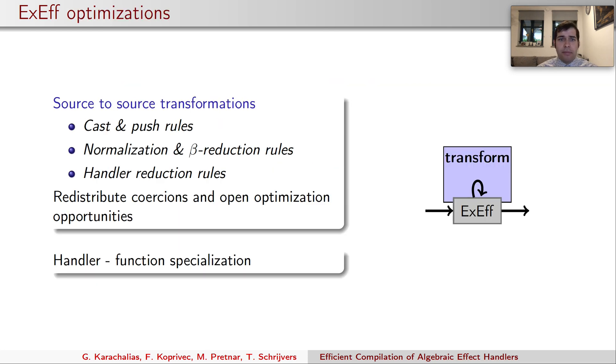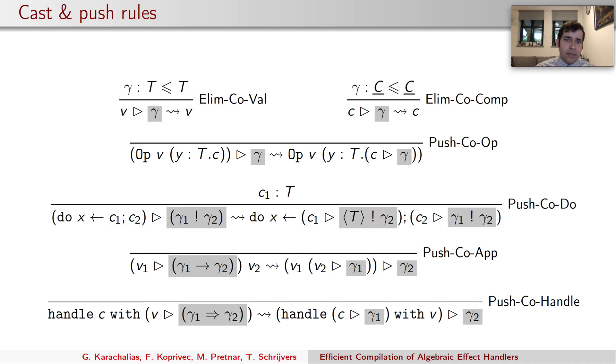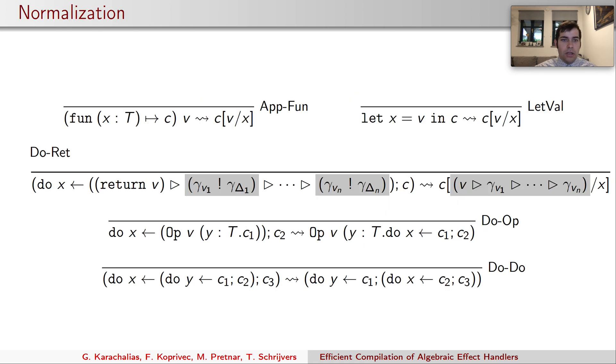The first pass of our optimization pipeline is XF optimization. We have source-to-source transformation rules and handler function specializations. The main idea behind source-to-source transformation rules is to redistribute coercions and open new optimization opportunities. Casts are distributed and pushed inside the terms to open them. Normalization and beta rules offer some additional inlining opportunities, though we currently inline very conservatively, and we also do some re-orderings, again, to offer more optimization opportunities down the road.